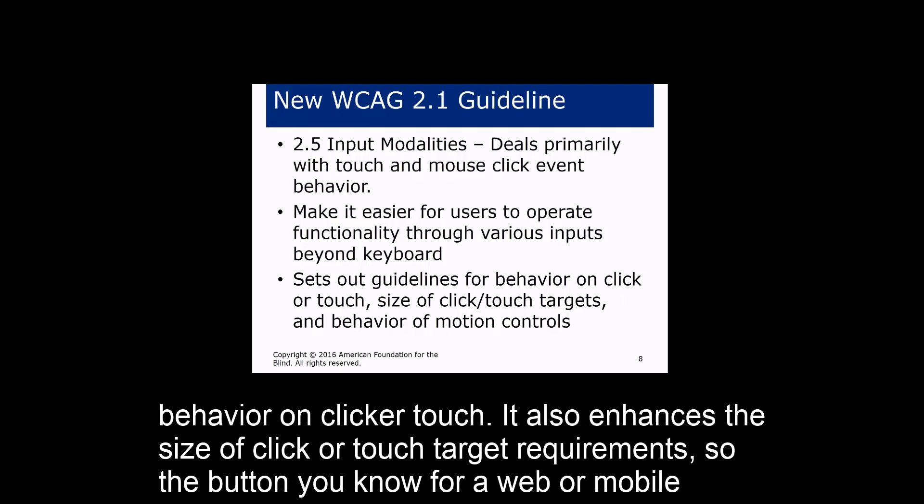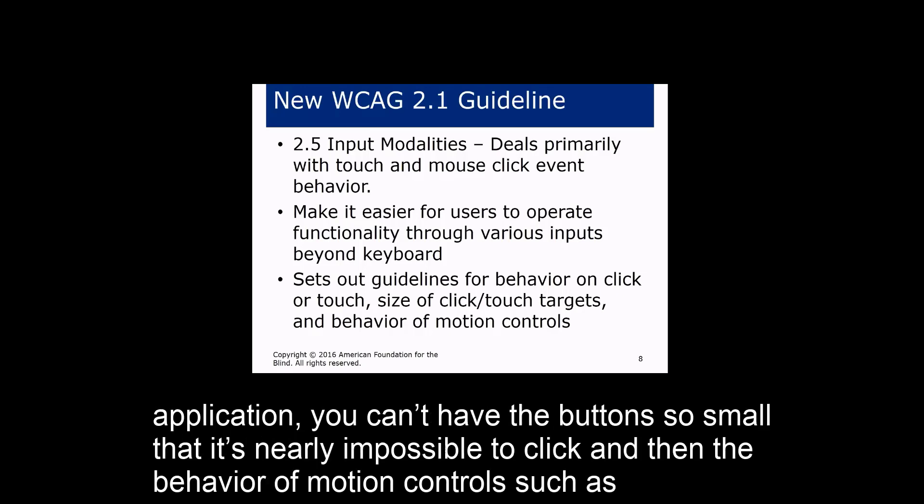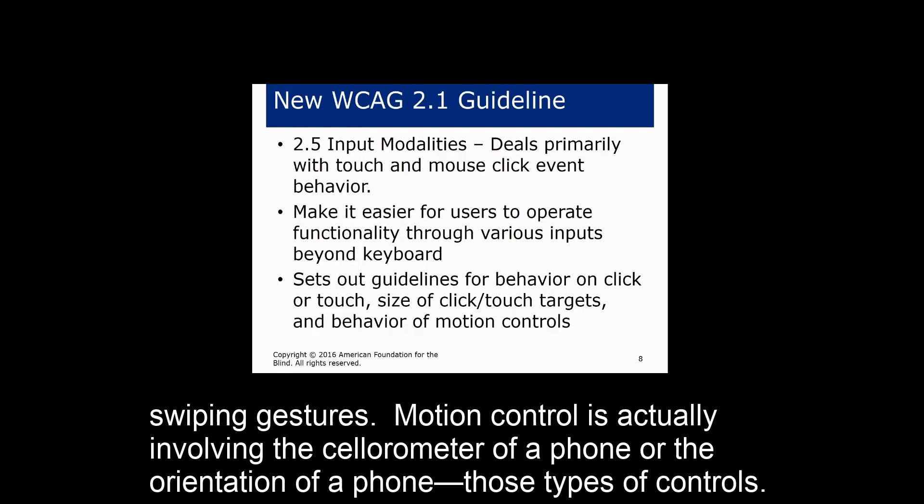The guideline also enhances the size requirements for click or touch targets — a button on a web or mobile application cannot be so small that it's nearly impossible to click. It also addresses behavior of motion controls, such as swiping gestures, and motion controls involving the accelerometer or orientation of a phone.